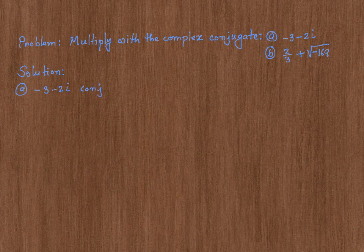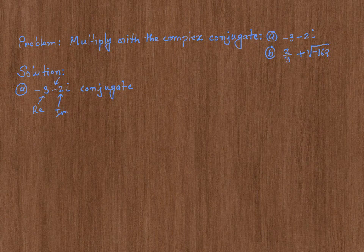The conjugate of this number is found by just changing the sign in front of the imaginary part. Remember, negative 3 is the real part of a complex number, and 2i is the imaginary part. So just change the sign of the imaginary part — the conjugate of negative 3 minus 2i is negative 3 plus 2i.